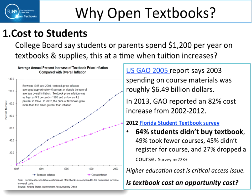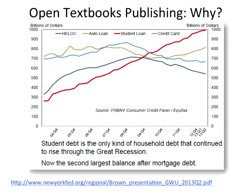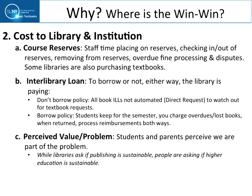We looked at the severe cost to students — textbooks were charging roughly $1,200 a year. There was also a big business in textbooks, roughly $6.5 billion in 2003. The Florida student textbook survey, which surveyed 22,000 students, found that students didn't buy a lot of textbooks — the majority would take that strategy. A major concern faculty legitimately have is that their students aren't adopting their expensive textbooks. I think of this as an opportunity cost. Student debt has reached about one trillion dollars, a severe problem we have to deal with.